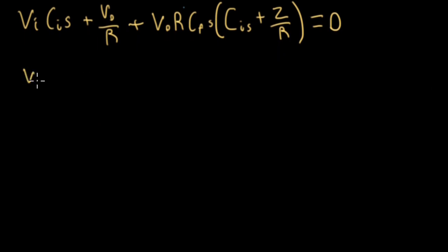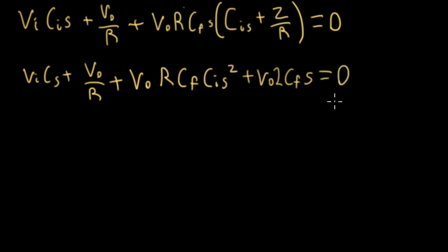I have VI, CS, plus VO over R, plus VO. Just multiplying this through here, I'll have R, CF, CI, S squared, and then plus this last term here, I'll have VO, CF, and the R's are going to cancel, but I'll have a 2 sitting here, and this is all times S. So this is equal to zero.